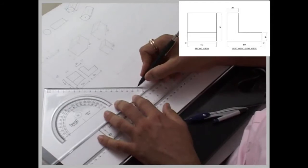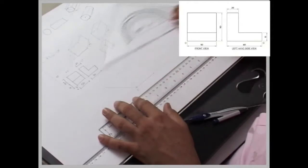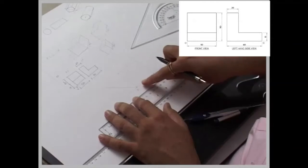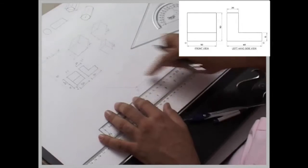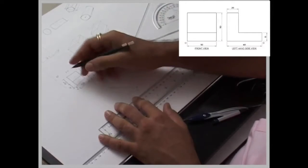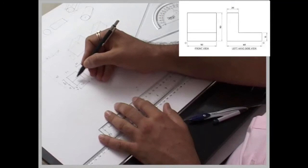Always remember, wherever there is an O, we will draw it on that side only. If O is on this side, we will draw it on this side. If O is on this side, we will draw 45 degree on this side.